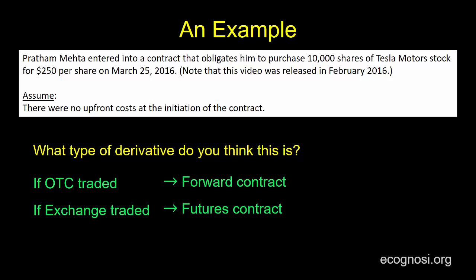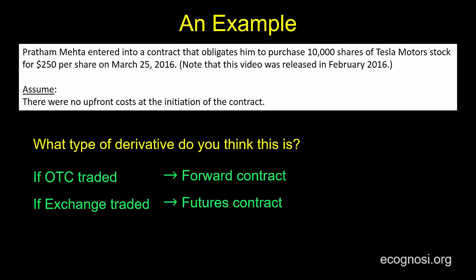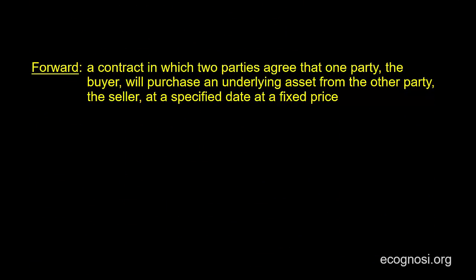Let's assume that it's a forward contract, and with that let's proceed with a more formal forward definition. A forward is a contract in which two parties agree that one party, the buyer, will purchase an underlying asset from the other party, the seller, at a specified date in the future, at a fixed price. Both the date and price are agreed when the contract is signed.